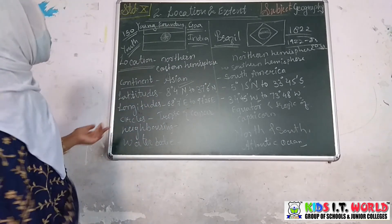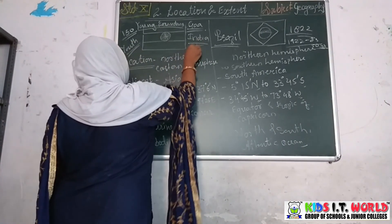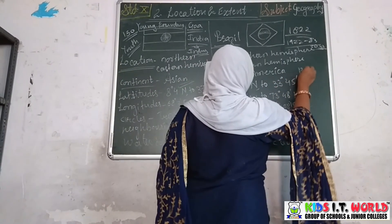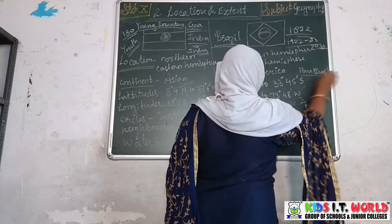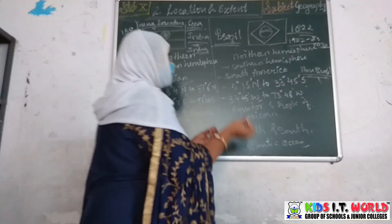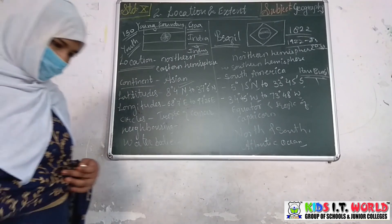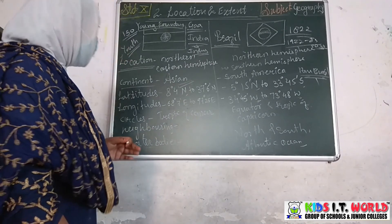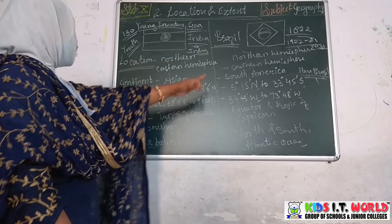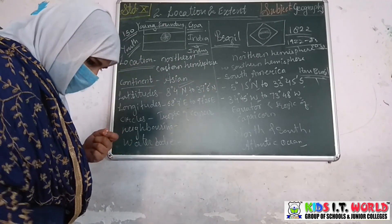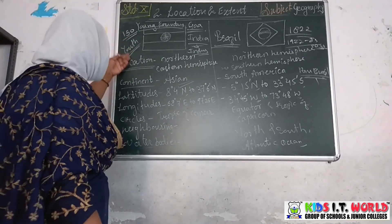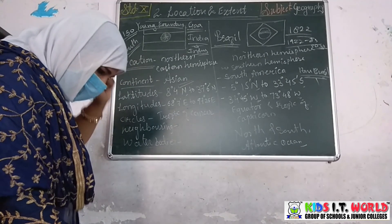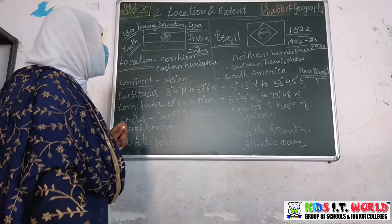The name of India comes from the river Indus. Similarly, the name Brazil comes from the Pau of Brazil — a local wood found in the region, so the country is also called after that local wood. Brazil has more geographical area compared to India — it is larger. India has 29 states, whereas Brazil has 26 states.